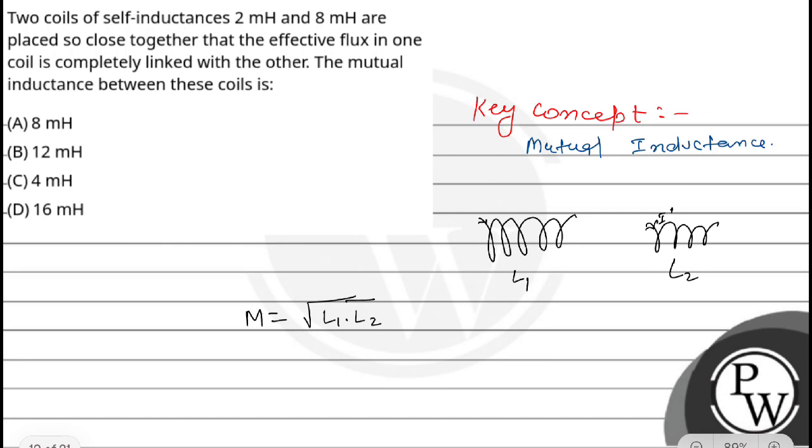The value of M is the square root of L1 times L2. L1 is given as 2 mH, which is 2 × 10^-3 H. L2 is 8 mH, which is 8 × 10^-3 H. So M equals the square root of 16 × 10^-6 H.